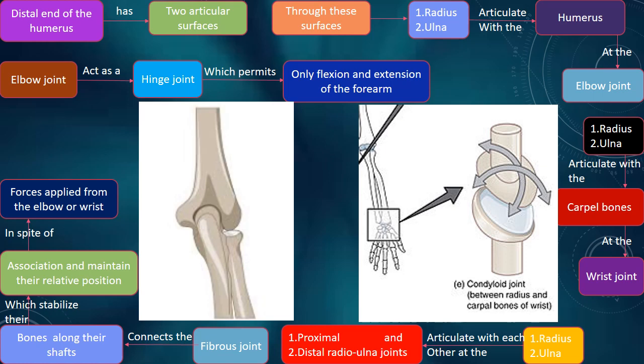The fibrous joint connects the bones along their shafts, which stabilizes their association and maintains their relative position in spite of forces applied from the elbow or wrist.